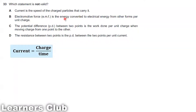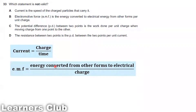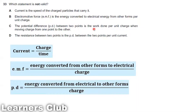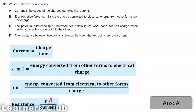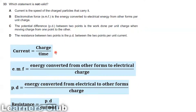Option B: Electromotive force is the energy converted to electrical energy from other forms per unit charge. Option C: Potential difference between two points is the work done per unit charge when moving charge from one point to another — electrical energy converted to other forms per unit charge. Option D: Resistance between two points is the PD per unit current, coming from Ohm's law. The statement that is not valid is option A, because current is the rate of flow of charge, not the speed of charge.